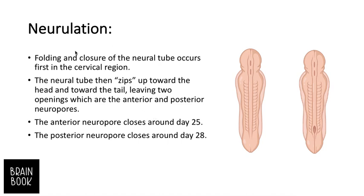During neurulation, the folding and closure of the neural tube occurs first in the cervical region, then zippers up and down toward the head and the tail, leaving two openings called the anterior and posterior neuropores. The anterior neuropore closes around day 25 and the posterior neuropore closes around day 28.